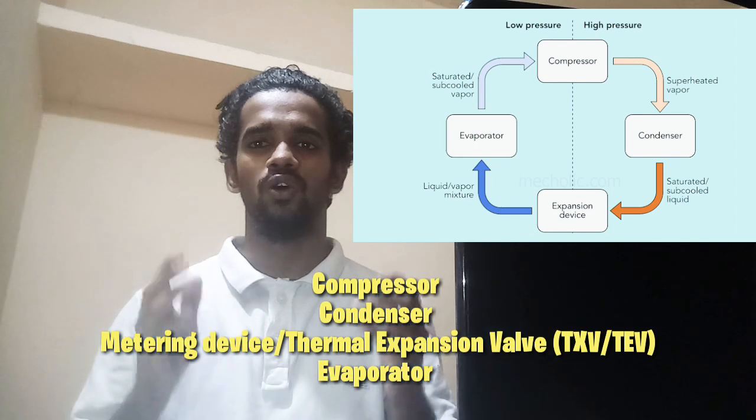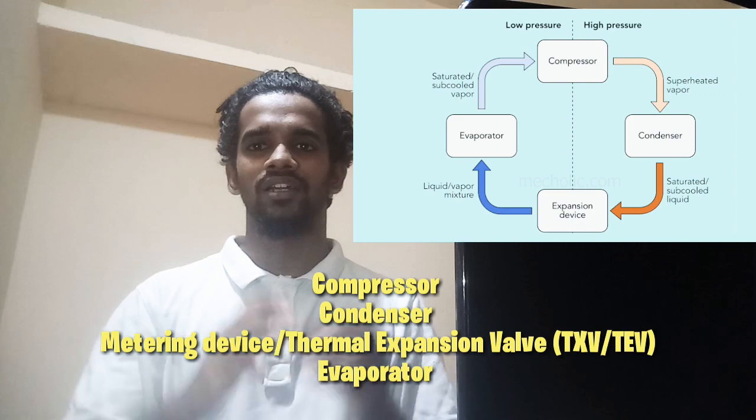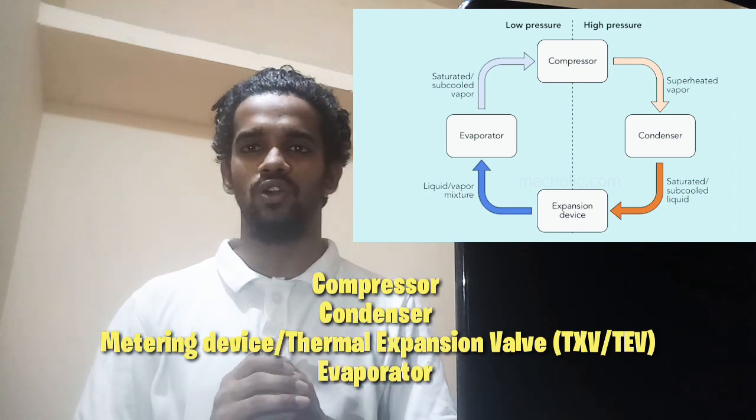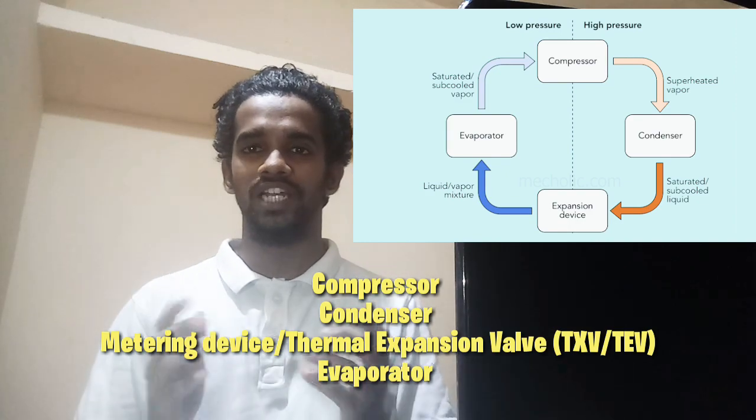In this video, rather than going in a theoretical point of view, I will be concentrating on a practical point of view. Speaking about the refrigerant cycle, there are four major components: compressor, condenser, metering device or thermal expansion valve, and evaporator. I want you to understand and remember these components in this particular order.